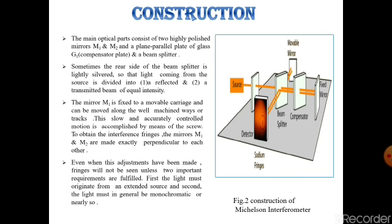Even when these adjustments have been made, the fringes will not be seen unless two important requirements are fulfilled. First, the light must originate from an extended source, and second, the light must be in general monochromatic or nearly so.